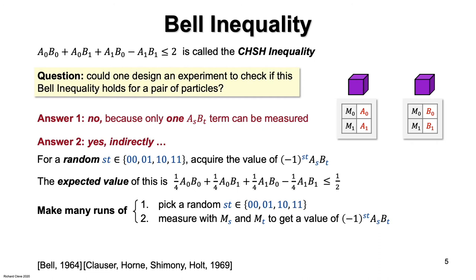When S and T are both one, you put a minus sign in front of the product. The average over many runs will converge to one half or less. So there's an experiment that statistically verifies that the CHSH inequality holds.